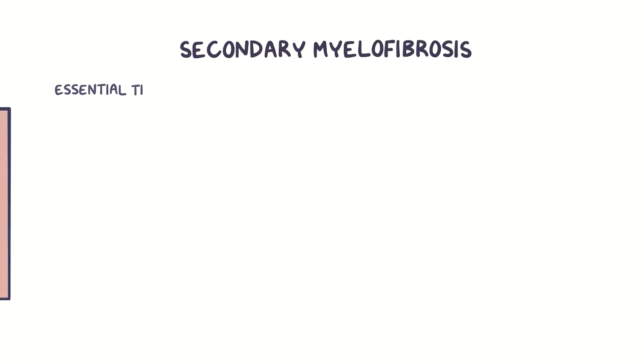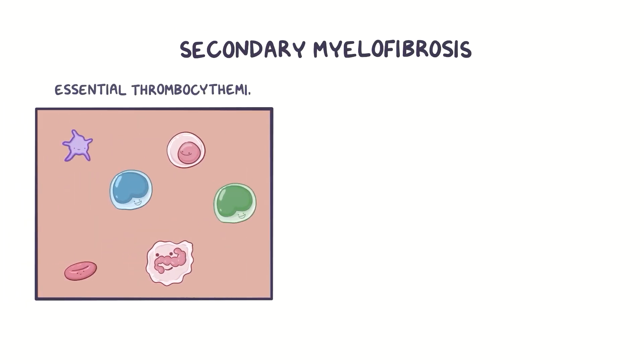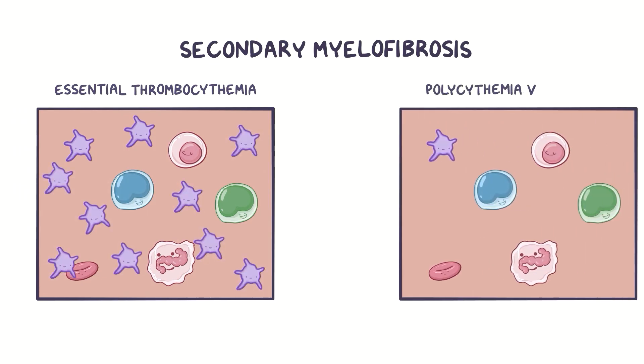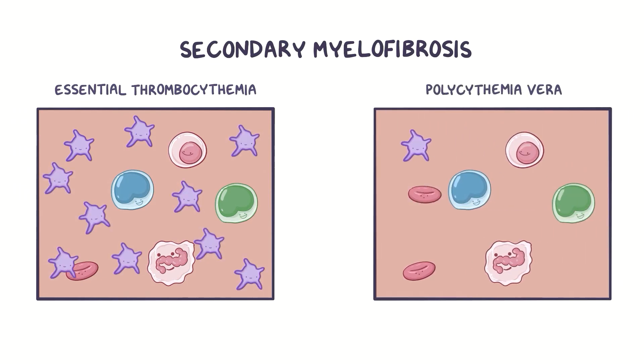Secondary myelofibrosis can develop from conditions like essential thrombocythemia, which is where excess platelets are produced, and polycythemia vera, which is where excess red blood cells are produced.